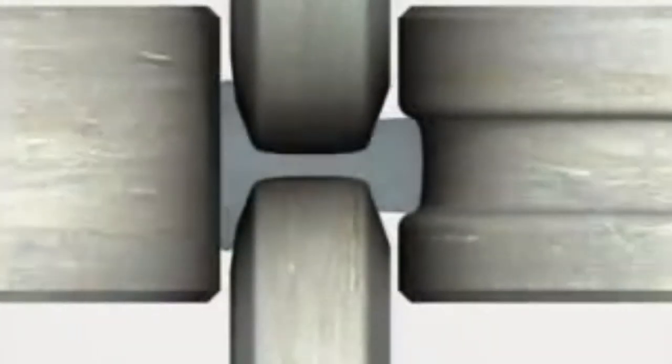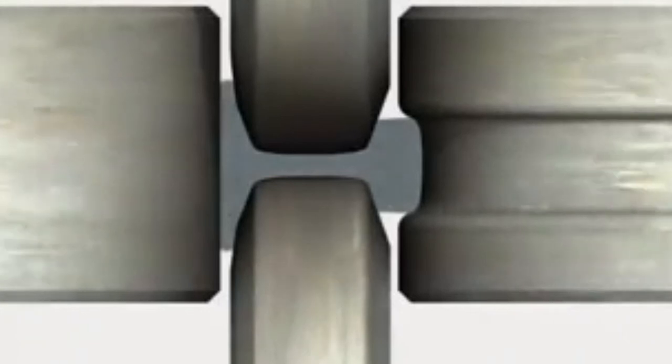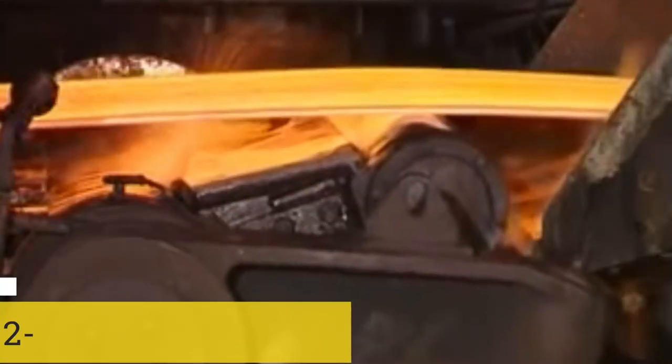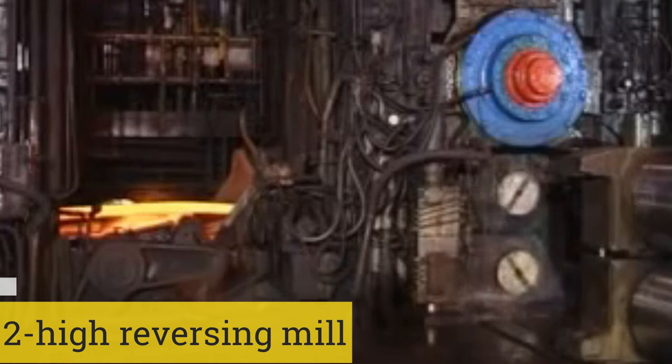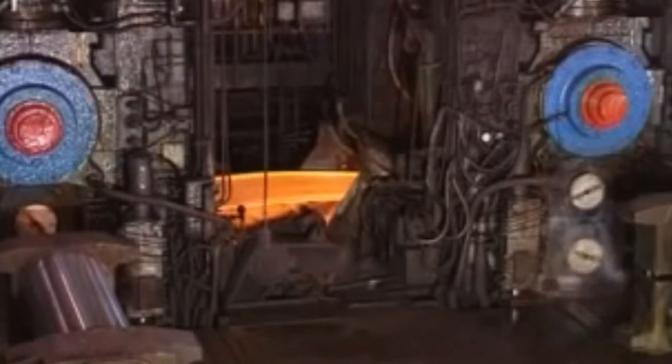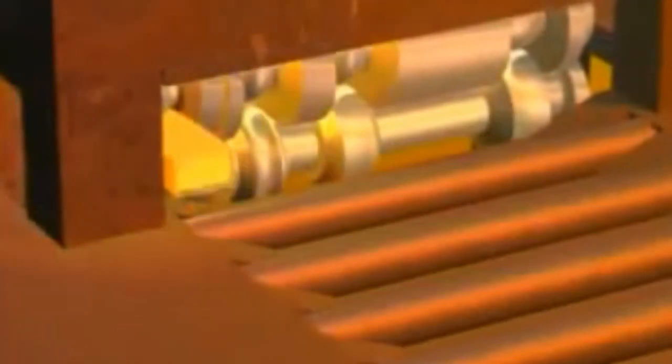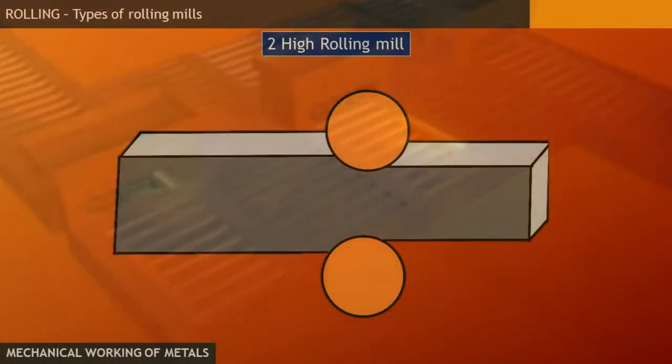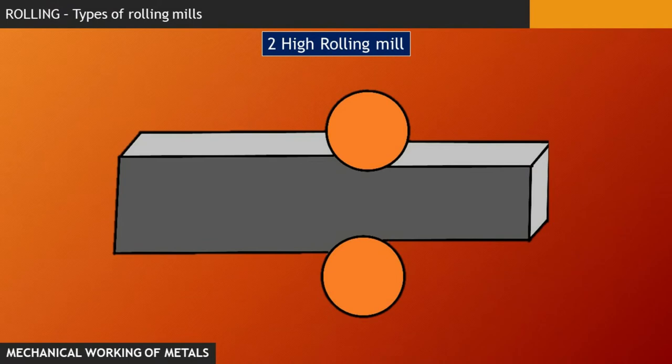This method of successive reduction slows down the process, and hence we have an alternate method, which we call a two-high reversing rolling mill, where the direction of rotation of the rolls is reversed after each pass. However, in this kind of rolling mill, the power consumption is tremendous. And this design is limited by the length that can be rolled and by the inertial forces that must be overcome each time a reversal is made.